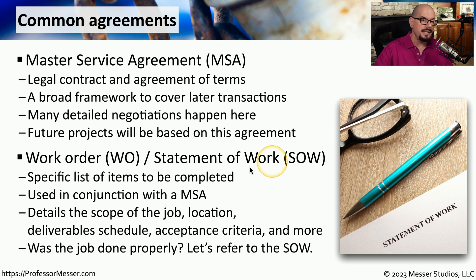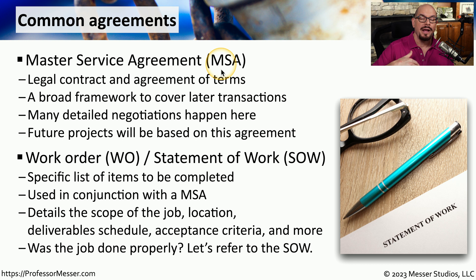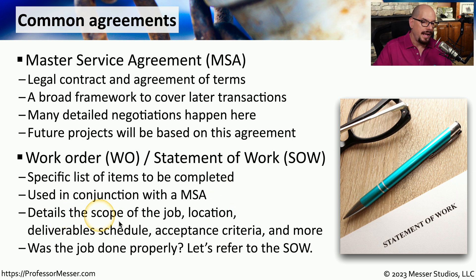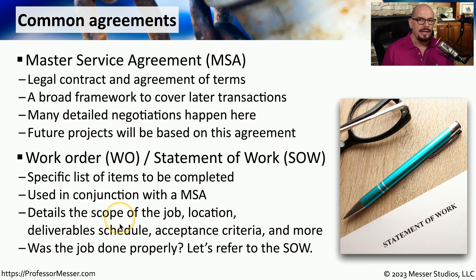Those additional services would be documented in a work order or a Statement of Work. The Statement of Work often includes a detailed breakdown of exactly what services will be provided and when. It's used in conjunction with the MSA so that we don't have to renegotiate all basic terms and can instead focus on a particular set of tasks. A common Statement of Work includes the scope of the job, the location, the deliverable schedule, and a list of exactly what is expected. If there's any question at the end of the service about what was done or not done, you can refer back to the Statement of Work.